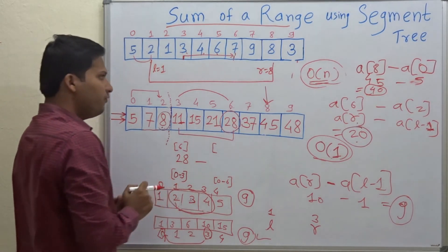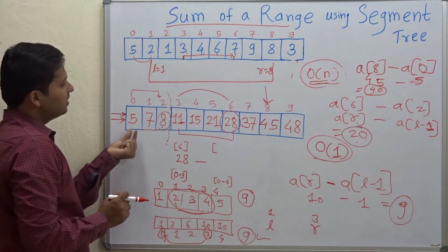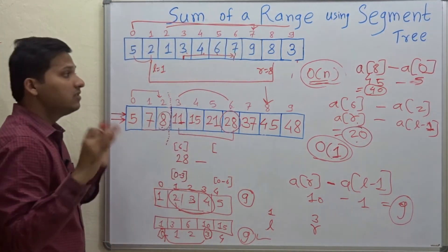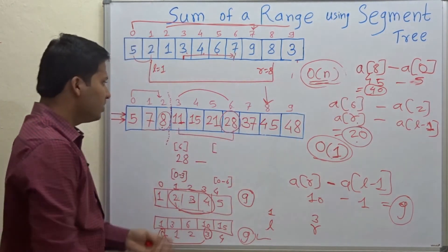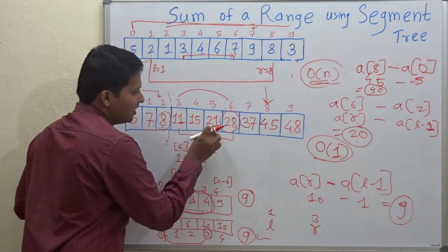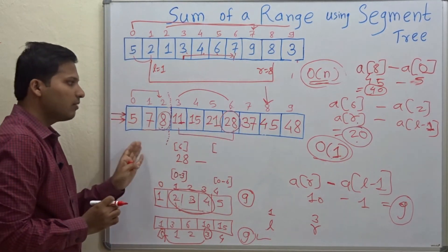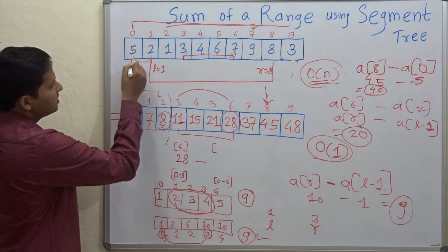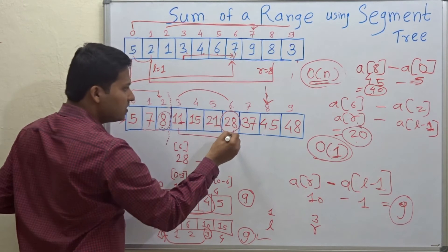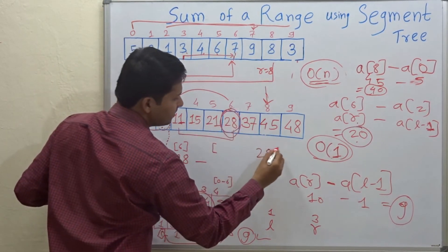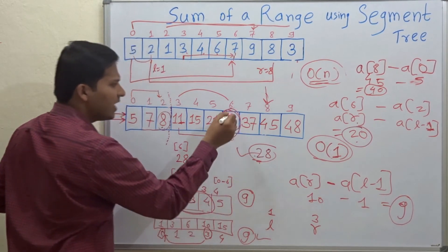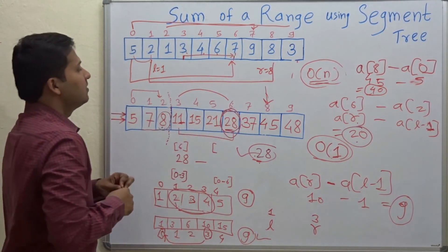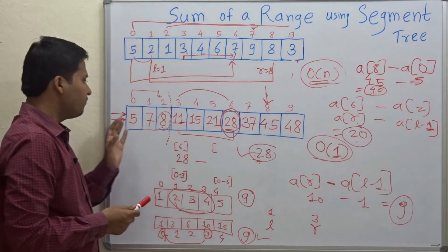If you want the sum in a range starting from 0, such as 0 to 6, there is no need to use the formula at all. Each memory location in the prefix sum array already stores the sum from index 0 to that index. So directly return the value at index 6, which is 28.